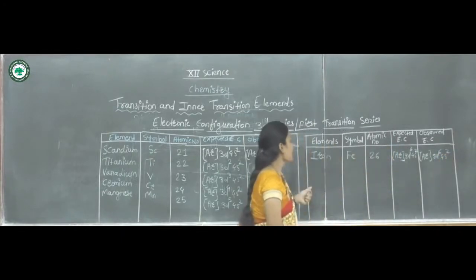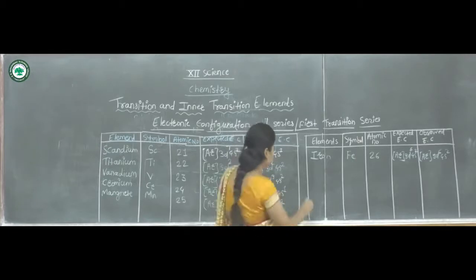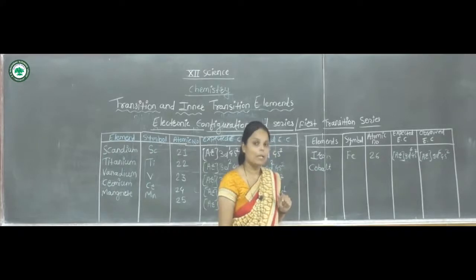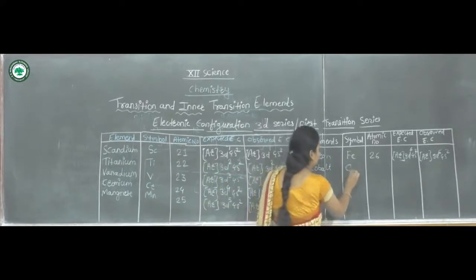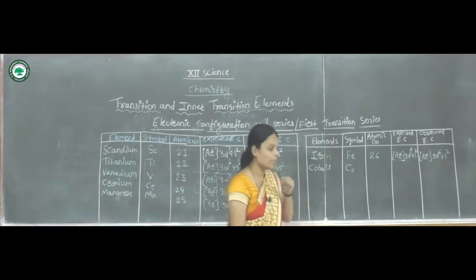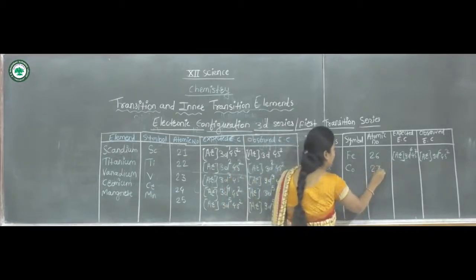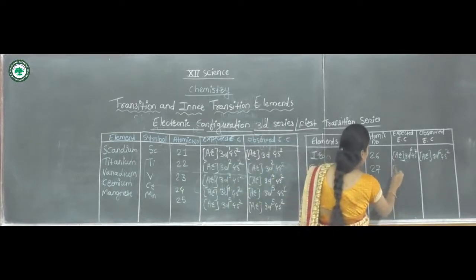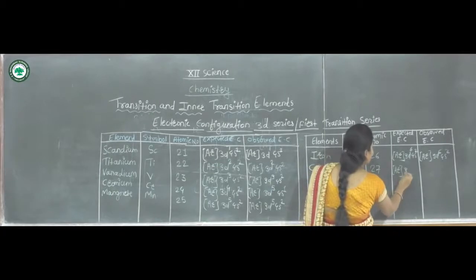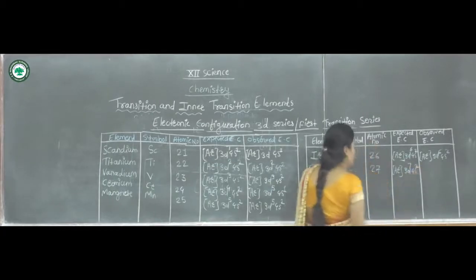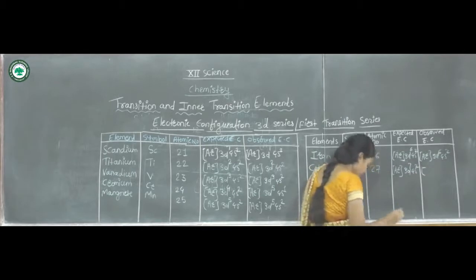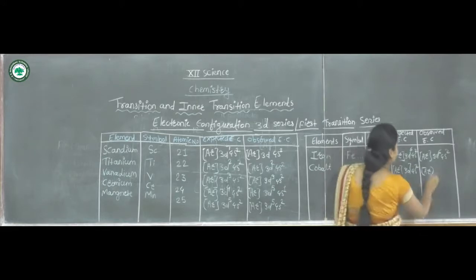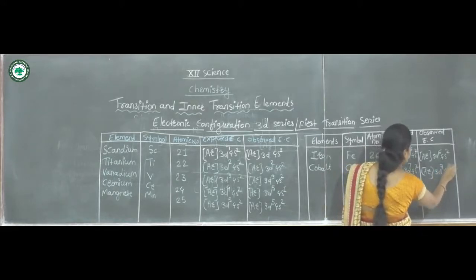The next element is Cobalt, symbol Co, atomic number 27. The expected electronic configuration is [Ar] 3d⁷ 4s². The observed electronic configuration is the same: [Ar] 3d⁷ 4s².